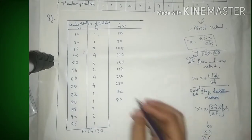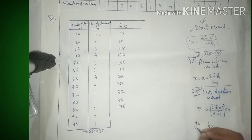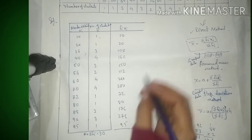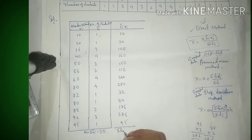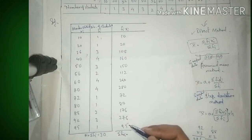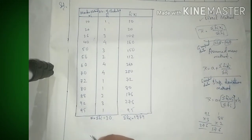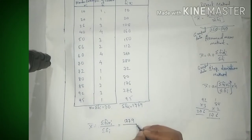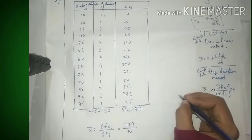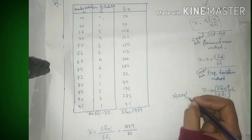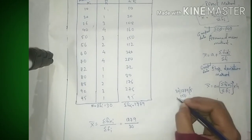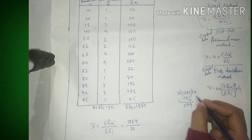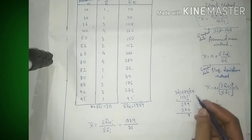88×2 = 176, 92×3 = 276 — इस तरह rough work में multiplication करते हैं। सभी fi·xi values add करने पर Σfi·xi = 1779 आता है। अब formula में substitute करते हैं: mean = Σfi·xi / Σfi = 1779 / 30। Division करने पर 30 से 1779 divide होगा।